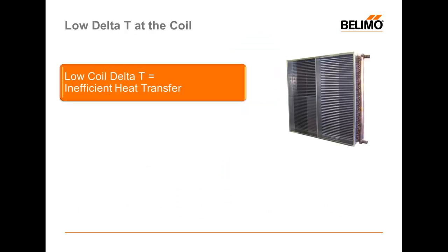Let's first talk a little bit about Delta-T. Delta-T at the coil refers to the difference between the supply and return water temperature from your coil. When you send very cold water down to your chilled water coil, if you do not transfer enough heat, that water will remain cold and get sent back to your chiller at a colder temperature than is designed. This is what's known as a low Delta-T.